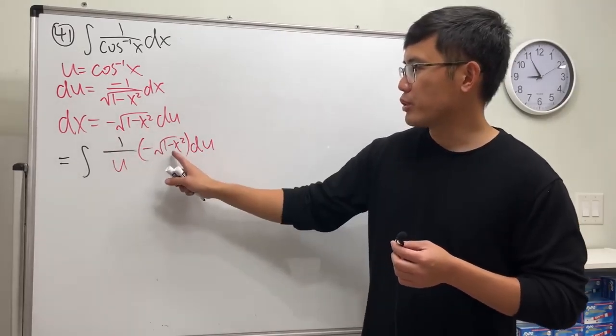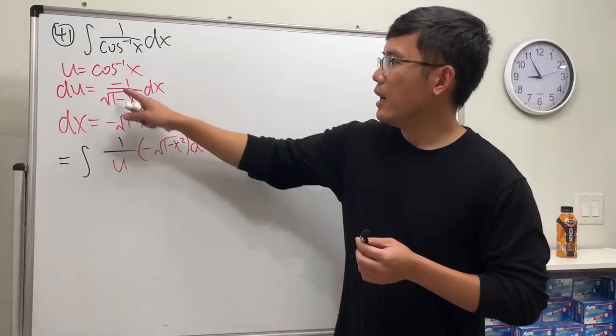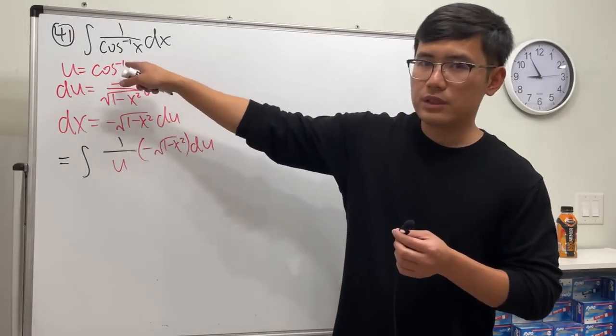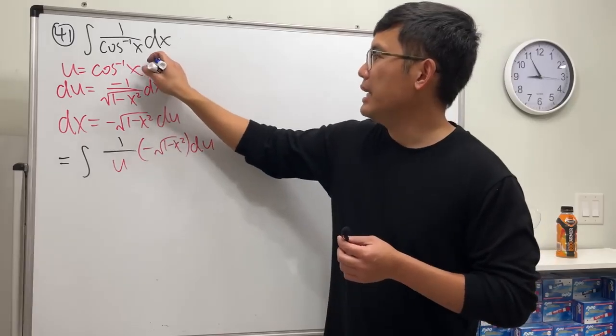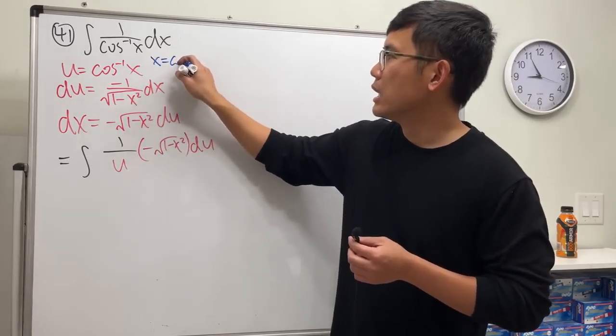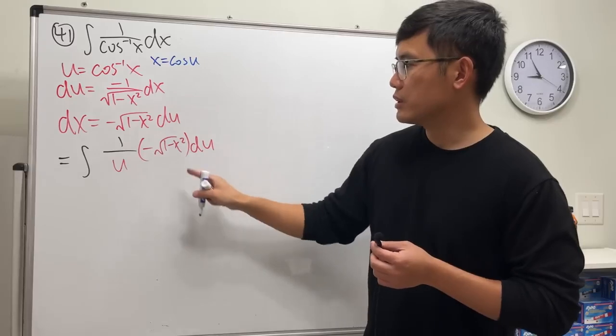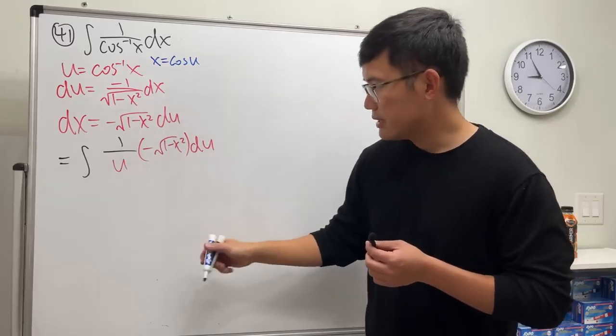But we have to get an expression for this. u equals inverse cosine of x. This means x equals regular cosine of u, so we can put it here. So ladies and gentlemen,